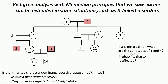Let us try to answer: if 3 is not a carrier, what are the genotypes of 1 and 4? We know it is a recessively inherited X-linked disorder. Person 1 has to be either X^A X^A or a heterozygous person X^A X^a. The person is not showing the disorder — it is recessive, so even the heterozygous genotype will not result in the disorder being manifest.